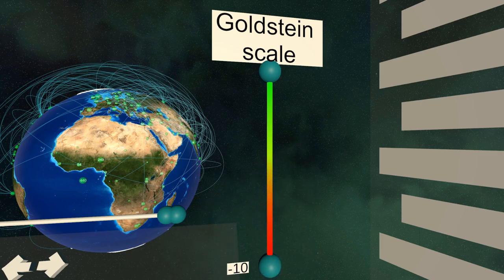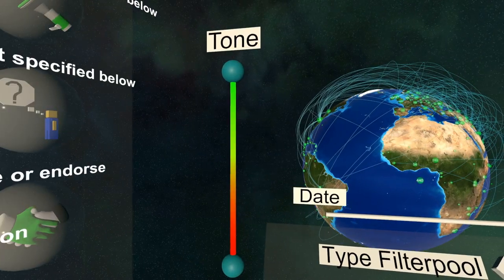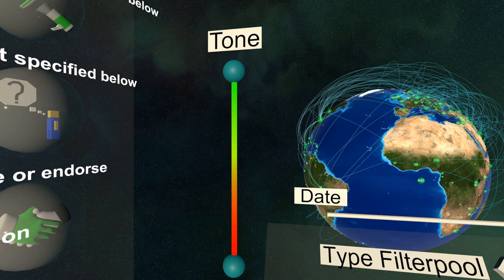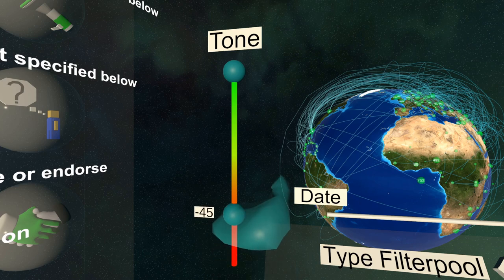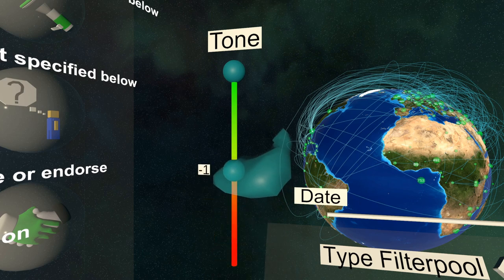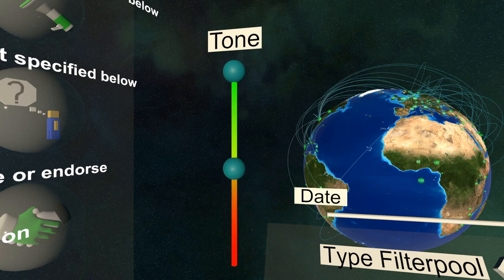To the left you'll find a slider to select a tone range of the shown news reports. Selecting a range allows you to filter out more positive or more negative reports and will give you an insight into the overall tone of reports on the topic.